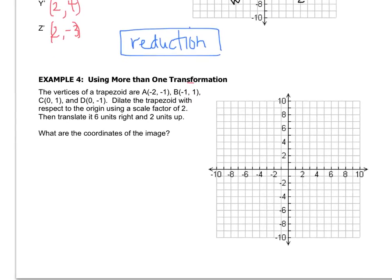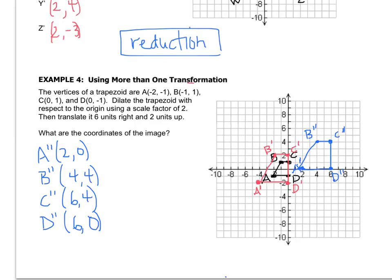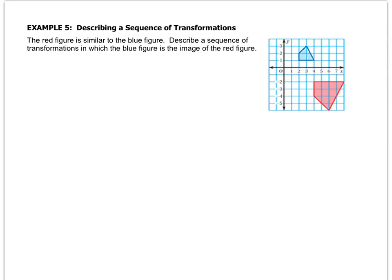In example 4, we're going to do multiple transformations — we did an example similar to this where we performed more than one transformation. I'd like you to pause the video and try this one on your own. This one's a little tricky because they want us to come up with a sequence of transformations, and there are many different combinations. I'm just going to give one answer, and if you come up with another one, that's fantastic.